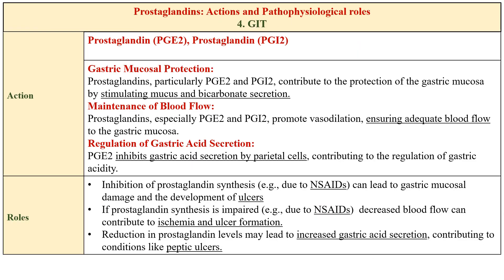Prostaglandins are protective for the gastrointestinal tract. Prostaglandin E2 and I2 protect the gastric mucosa by maintaining blood flow to the gastric mucosa and regulating gastric acid secretion. They inhibit gastric acid secretion by the parietal cells, and they promote mucus and bicarbonate secretion, giving them a gastric mucosal protective effect. They also maintain adequate blood flow to the gastric mucosa by promoting vasodilation, and they regulate gastric acidity by inhibiting acid secretion by parietal cells.